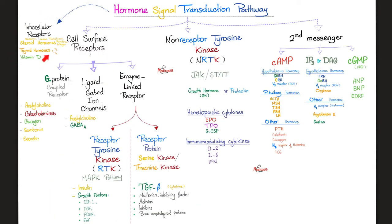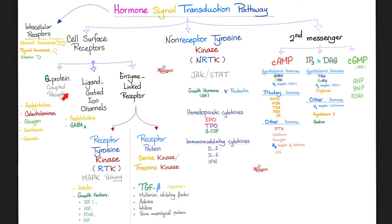We talked about the intracellular receptor pathway — steroids, thyroid hormones, vitamin D, vitamin A. These are lipid-soluble; they do not need a cell surface receptor. The receptor is on the inside because the hormone can diffuse through the membrane to find its receptor in the cytoplasm or on the nucleus. We also covered the cell surface G-protein receptor family.